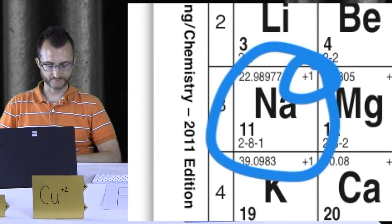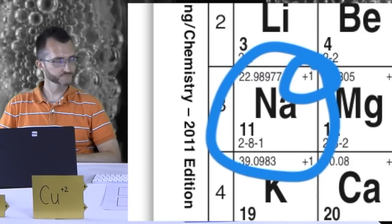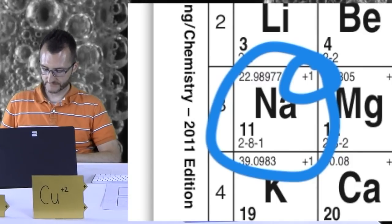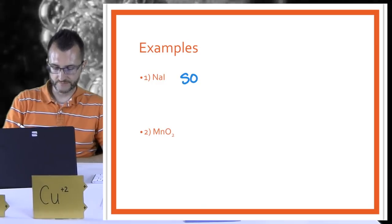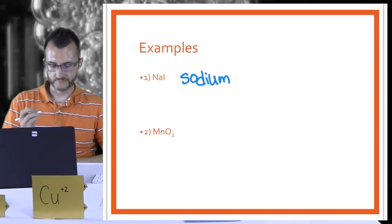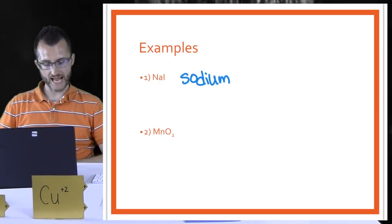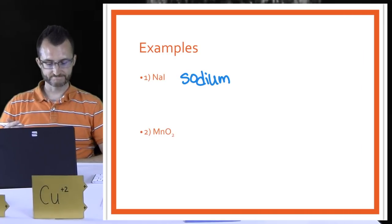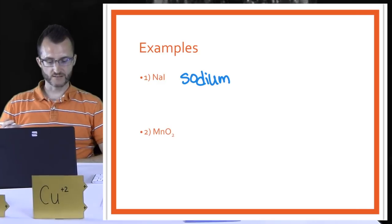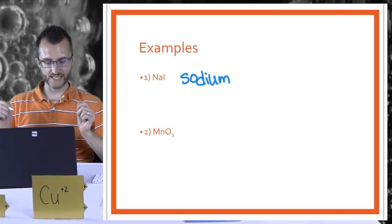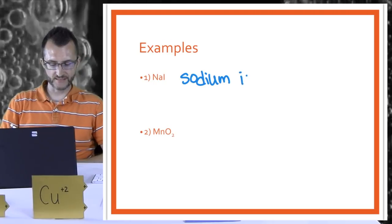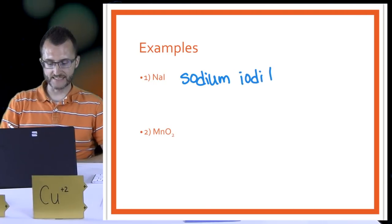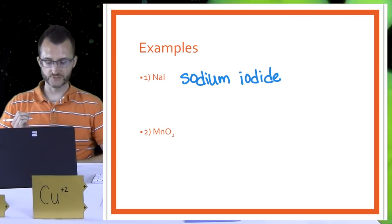There's no math involved here, so we're just writing out the names. NA is sodium. And I is iodine — we've got to change the ending to -ide, so it becomes iodide. The final name is sodium iodide.